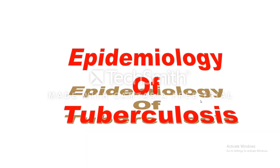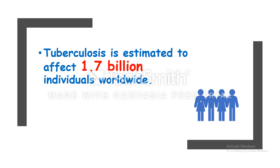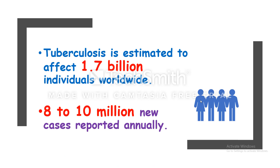This is a serious disease, so we're going to spend a few minutes talking about the epidemiology. Tuberculosis is estimated to affect 1.7 billion individuals worldwide, with 8 to 10 million new cases reported annually. This means that every 10 seconds one person falls ill with tuberculosis, and every 30 seconds one person in the world dies of tuberculosis.